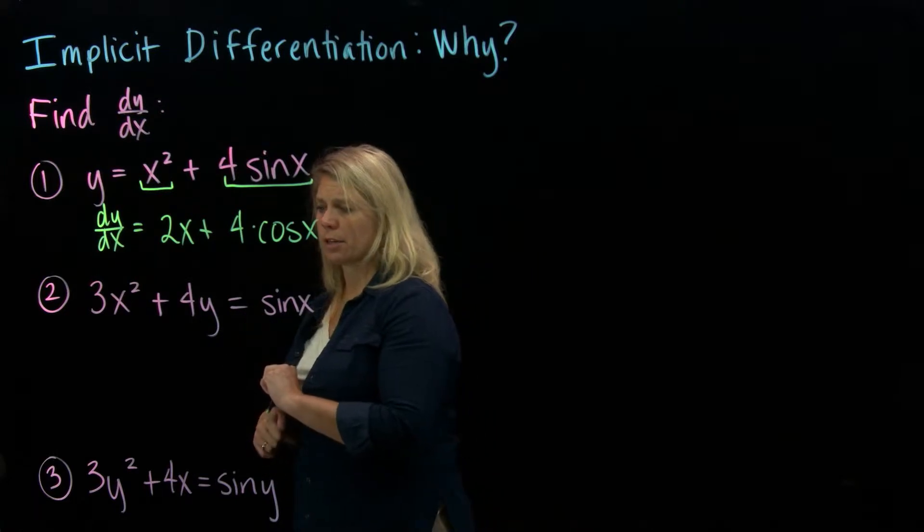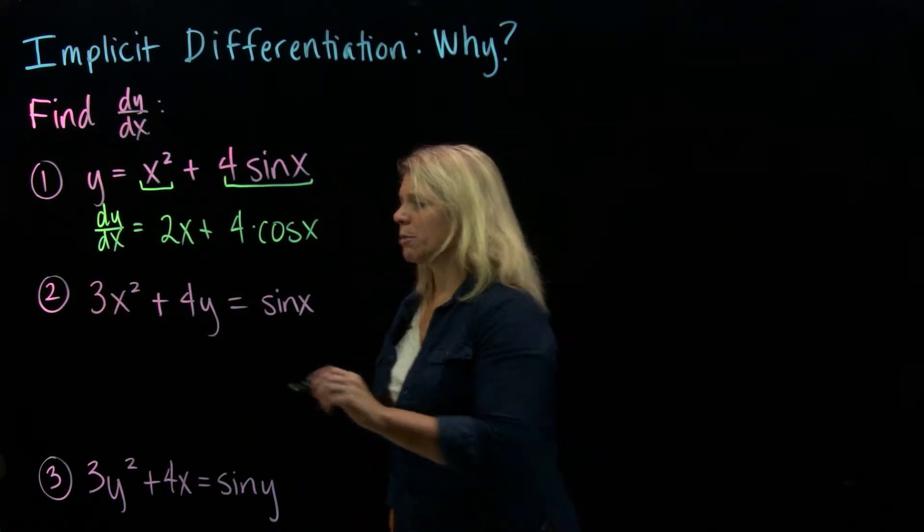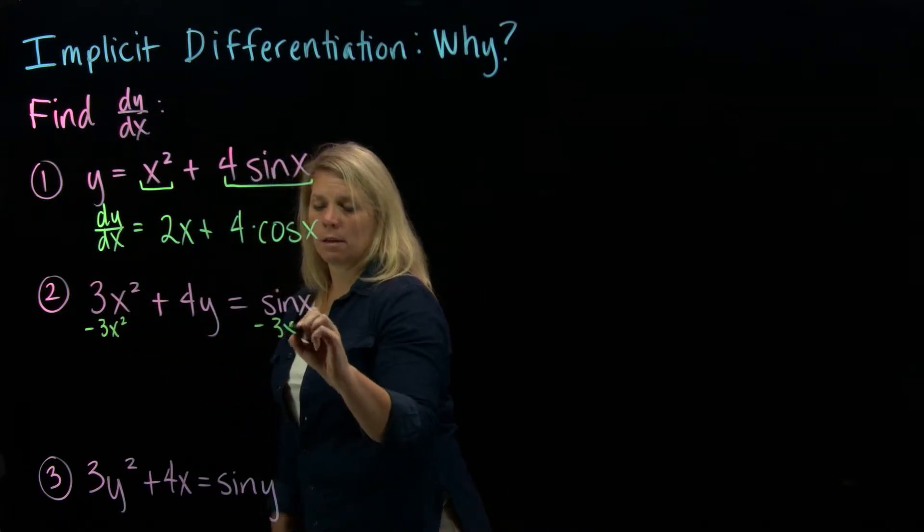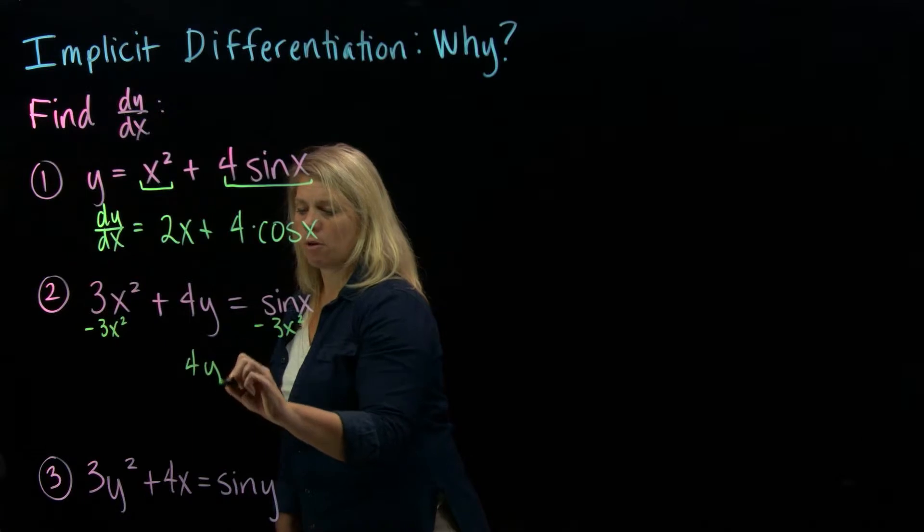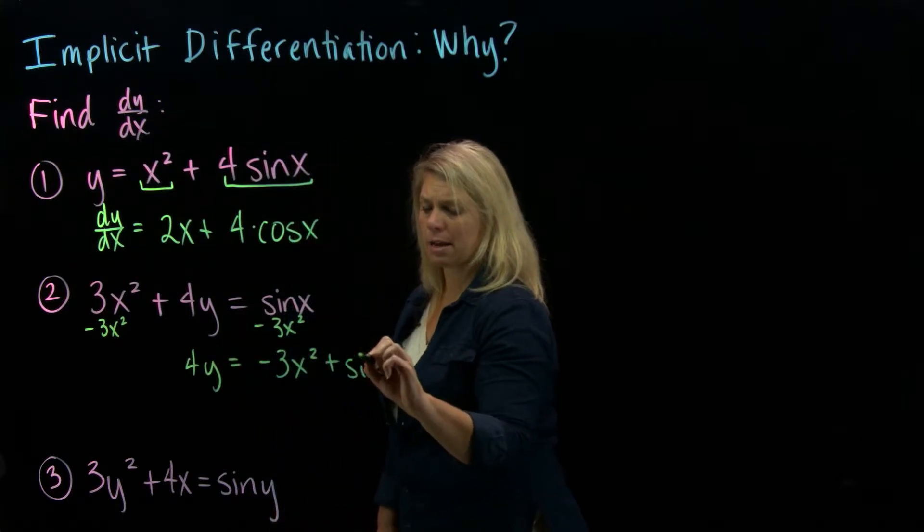All right, so I'm going to solve for y. I'm going to subtract the 3x squared from both sides. And so I'll have 4y equals negative 3x squared plus sine of x.